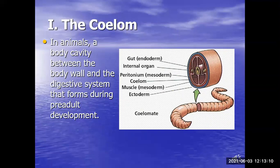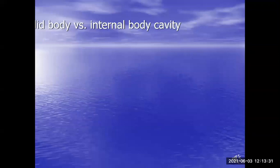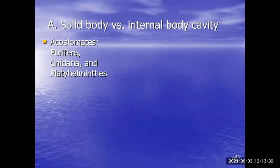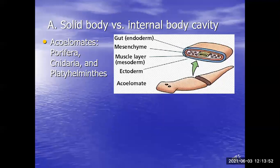Some animals are so simple they don't need a coelom — those are called acoelomates, with a solid body. The acoelomates we saw are the Porifera (sponges), cnidarians (jellies), and Platyhelminthes (flatworms). A planarian is part of Platyhelminthes, which means flat worm. These guys don't have any complex organs — they just diffuse things through the skin, whether it's waste products or oxygen. So they don't need circulatory, excretory, or respiratory systems because they're diffusing what they need through the skin.